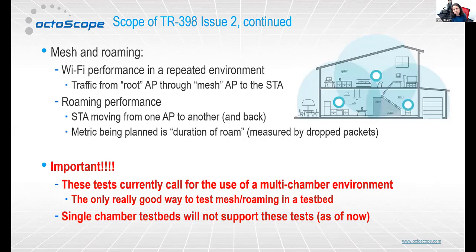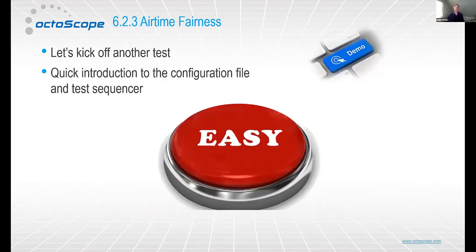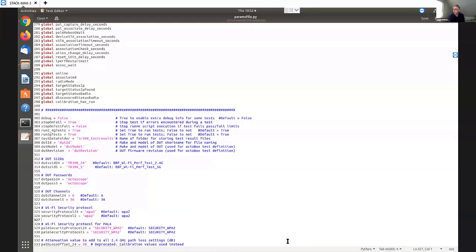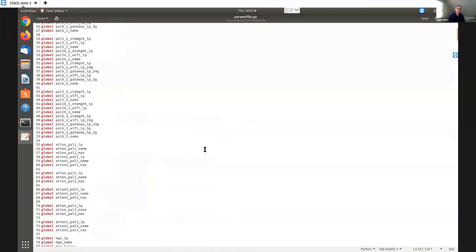The roaming test being proposed looks at moving a station from one AP to another and back, measuring how long the roam takes by counting dropped packets during the roam event. TR-398 currently calls out both single and multiple chamber environments, but this roaming test will likely only be possible in a multiple chamber environment. Our current test bed already supports all of this — PAL6 already supports 11ax, and we're already a multiple chamber environment.